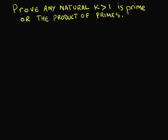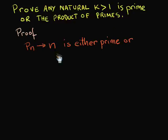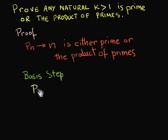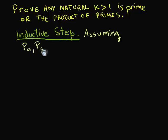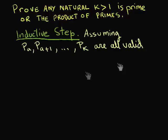As an example of a proposition that can be proved by the principle of strong induction, we have: prove that any natural greater than 1 is prime or the product of primes. Let p sub n be the statement that n is either prime or the product of primes. Obviously p sub 2 is true since 2 is prime. We assume now that p sub a, p sub a plus 1, p sub a plus 2, up to p sub k are all valid. Let us show that p sub k plus 1 is true.